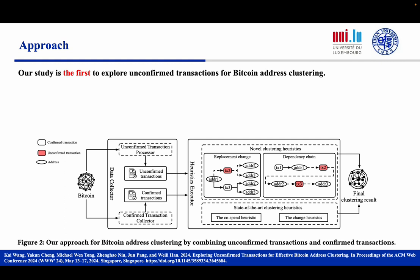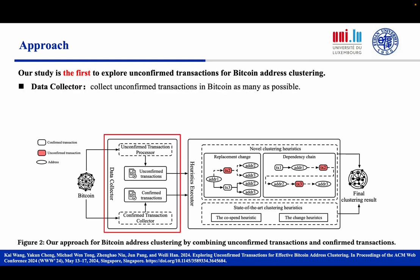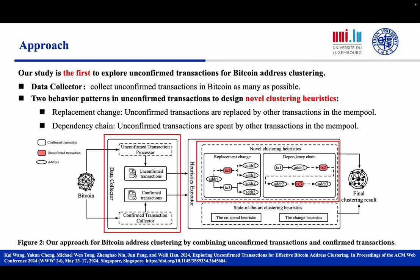To the best of our knowledge, our study is the first to explore unconfirmed transactions for Bitcoin address clustering. First, we introduce a reliable data collector to collect both confirmed and unconfirmed transactions — it can collect unconfirmed transactions in Bitcoin as many as possible. Then, we propose two novel clustering heuristics to uncover additional address associations by analyzing the specific behavior patterns in unconfirmed transactions, improving Bitcoin address clustering.